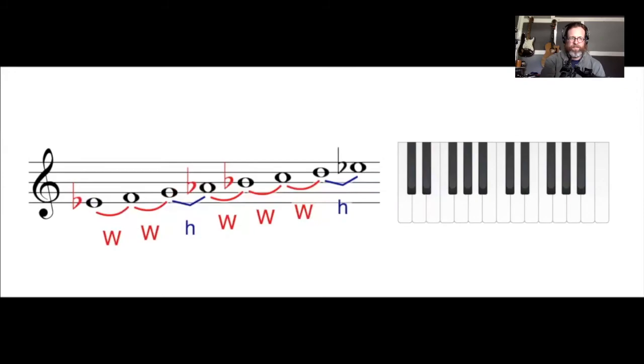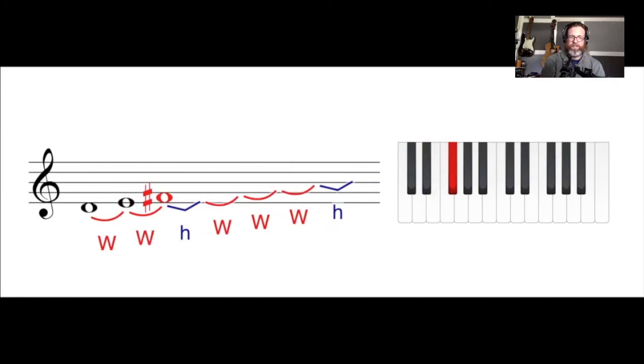Let's try the same thing from a D as our tonic. So D to E is good, but right away E to F natural, as we know, is a half step and we're looking for a whole step, so we just have to raise that F natural to an F-sharp. Now as we move on, F-sharp to G is a half step.